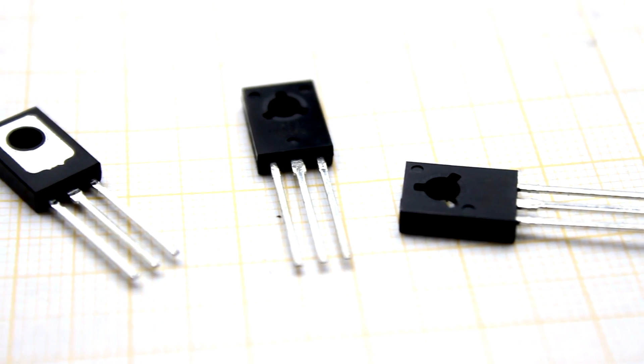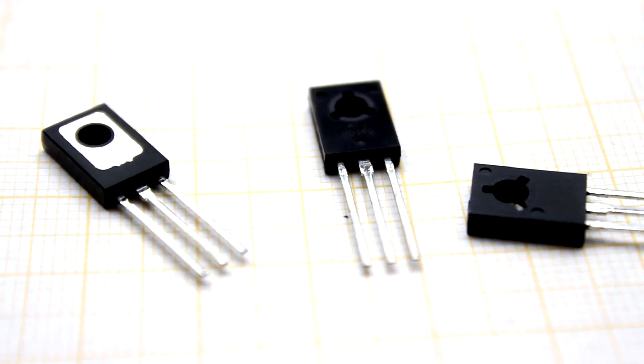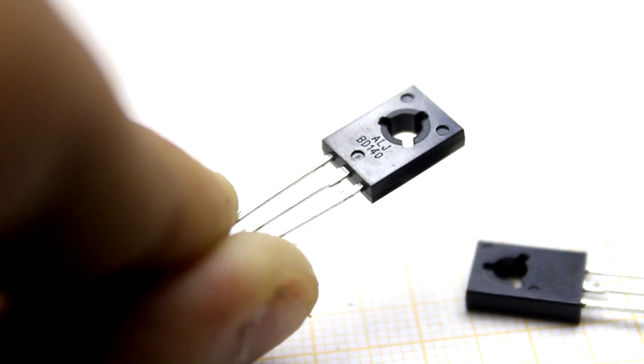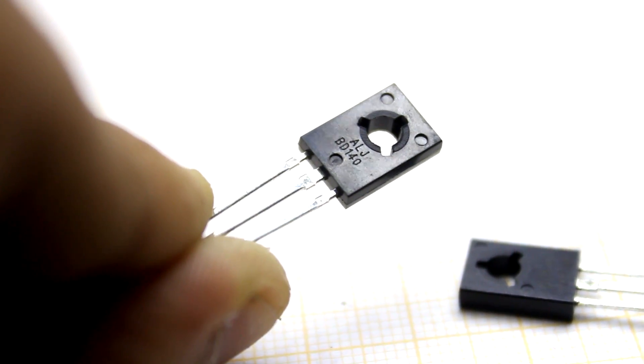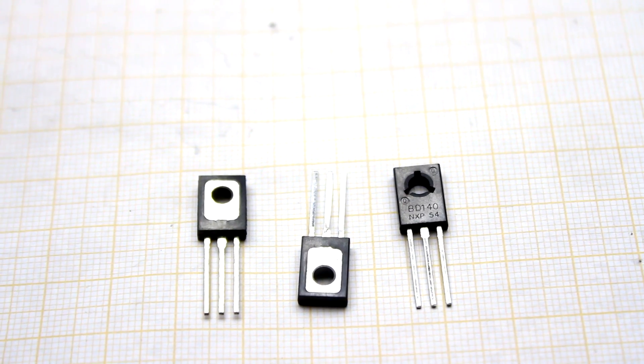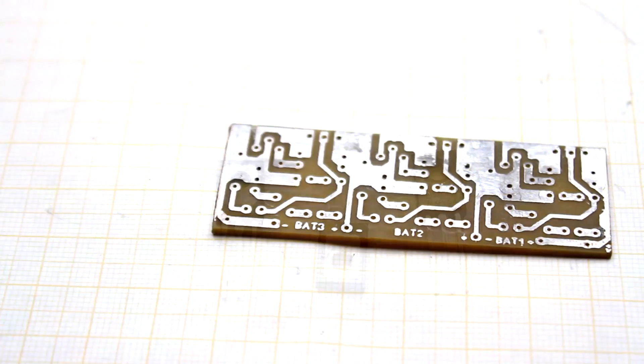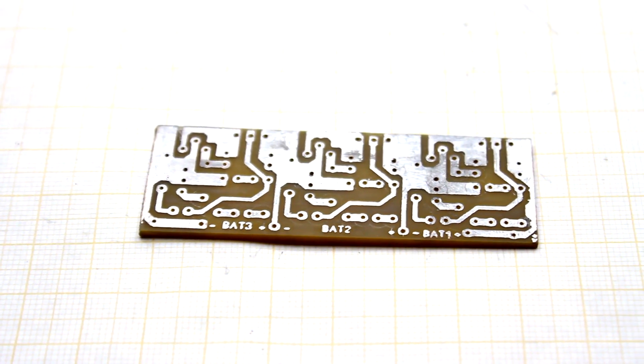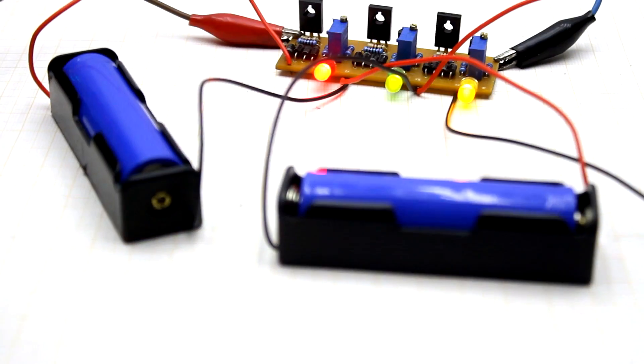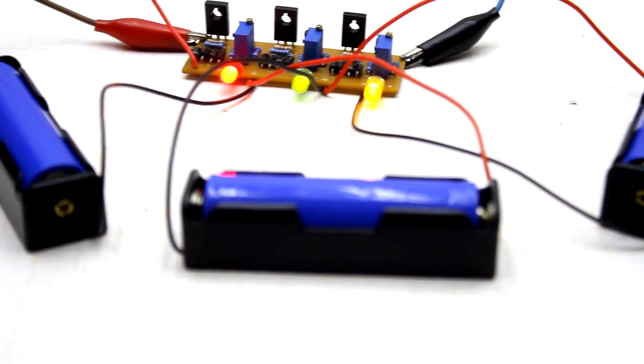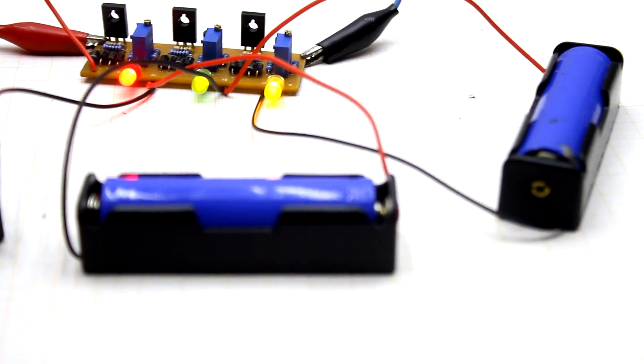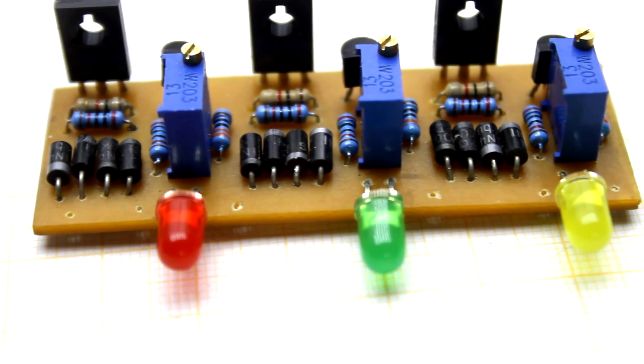In my version, the transistor BD140 is used. It isn't particularly critical. You can use any PNP transistor with a collector current above 1 Ampere. On one board, I collected three similar circuits. This assembly will help to charge three lithium-ion banks at once. In theory, the number of assemblies can be anything.